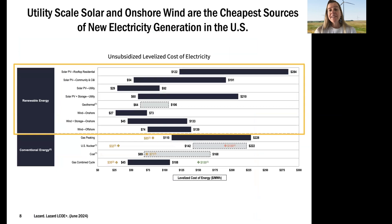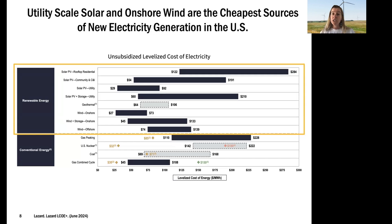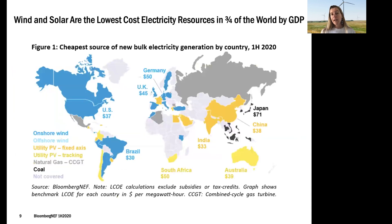Utility-scale solar and onshore wind remain the cheapest sources of new electricity generation in the United States. This study looks at the levelized cost of electricity — levelized over the lifetime of a project. Wind, solar, and combined cycle natural gas are the three cheapest, and that's without subsidies — no mandates or subsidies at federal or state levels. They truly are the cheapest resource. Around the world, wind and solar are the lowest cost electricity resources in three quarters of the world, so the growth we're seeing is largely driven by markets.